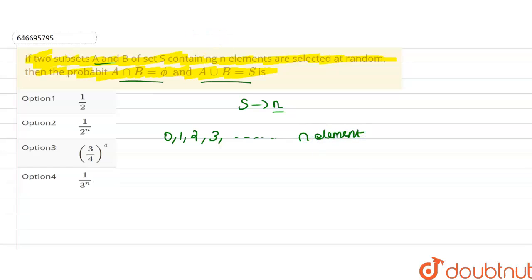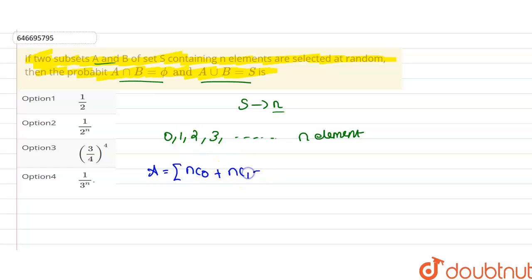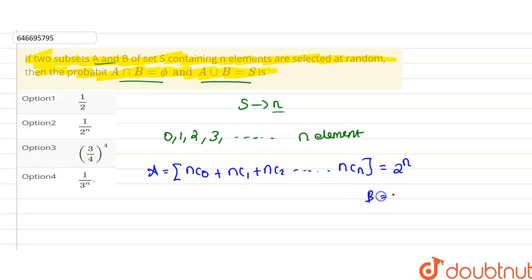A will contain nC0, nC1, nC2, up to nCn elements, which is equal to 2 power n. Similarly, B is also equal to 2 power n.